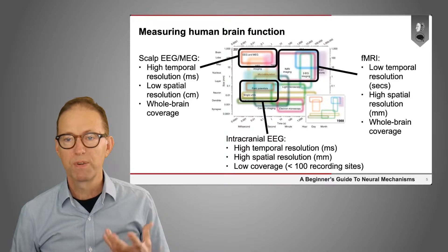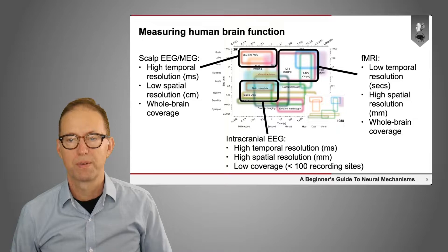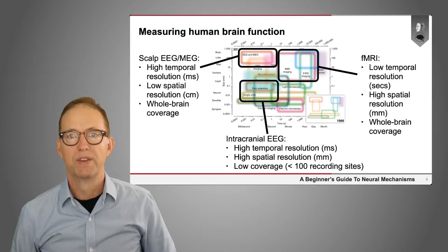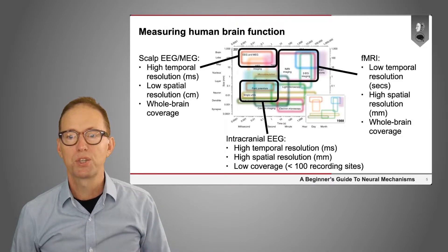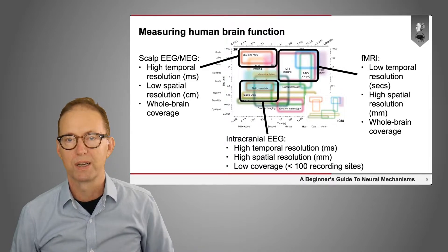We're going to focus primarily on functional MRI, or fMRI, in this course. This is a method that has relatively low temporal resolution — it can resolve events on the order of seconds — but relatively high spatial resolution, resolving features at the level of millimeters. It also has whole-brain coverage.